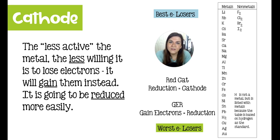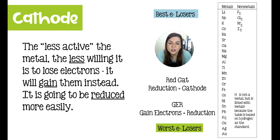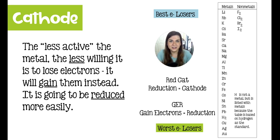On the second half of the activity series, you will also see a list of non-metals. The same kind of concept applies here, except they're looking to gain electrons. At the top of that non-metals list you would have fluorine, and at the bottom you have iodine. Other than that, we don't typically put the other non-metals on the activity series.